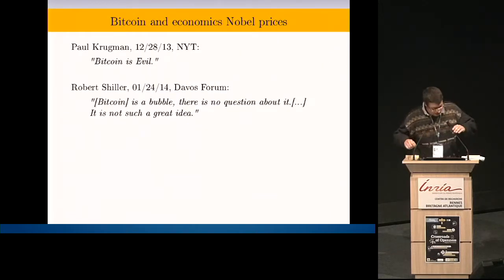If you heard about Bitcoin and economics in the press, it should look more or less like this. Let's call them authorities. Nobel Prizes are authorities. Paul Krugman said Bitcoin is evil, not less. And more recently, Robert Shiller, another Nobel Prize, said that Bitcoin is definitely a bubble and not such a great idea.